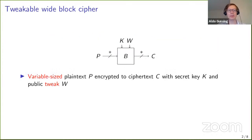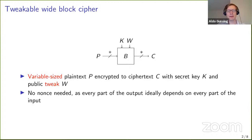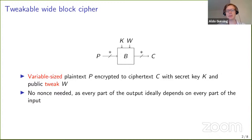We look at two different tweakable wide-block ciphers. The tweakable wide-block cipher encrypts a variable-sized plaintext P to a ciphertext C under a secret key K and a public tweak W. We do not really need a nonce, as ideally every part of the output should depend on every part of the input.